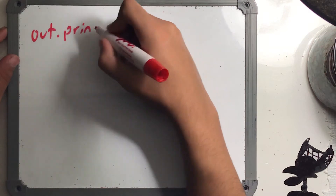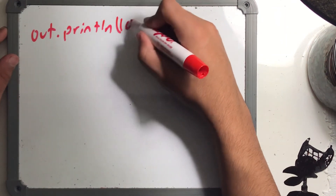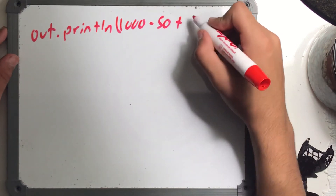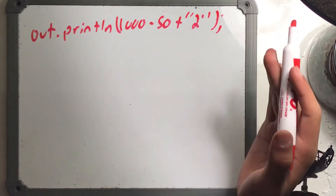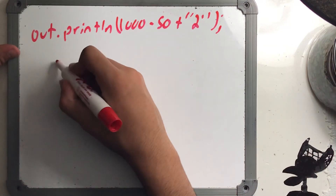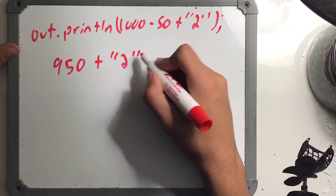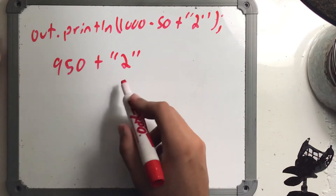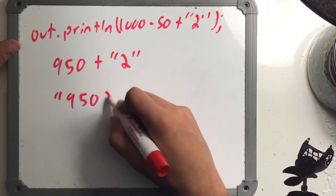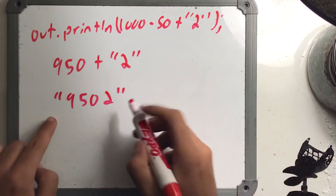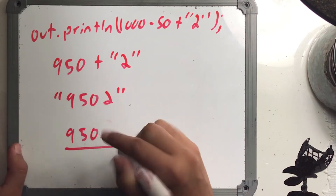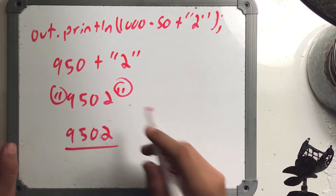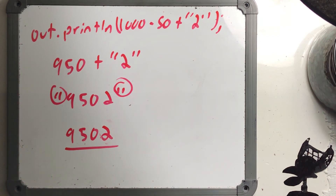Last example: printing 1000 - 50 + "2". Evaluate everything to the left of the string: 1000 - 50 = 950. Then the string concatenation magnet kicks in: 950 + "2" becomes "9502". When you print strings, the quotation marks don't appear, so the output is 9502. Remember, "2" here is a string, not a number.